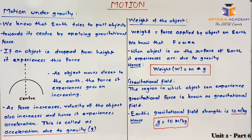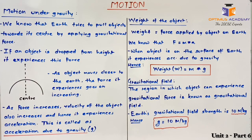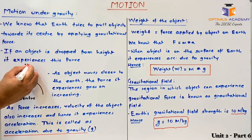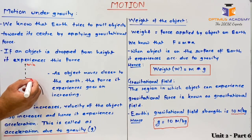Imagine this is the 10th floor of a building from where you are dropping the object. As you drop it, the object reaches the 9th floor, 8th floor, and so on. As it goes downward and force increases, the speed with which the object moves increases. As it reaches near the ground, it has maximum speed. So at the 10th floor the object has minimum speed, whereas when it is just about to touch the surface of the earth, it has maximum speed.